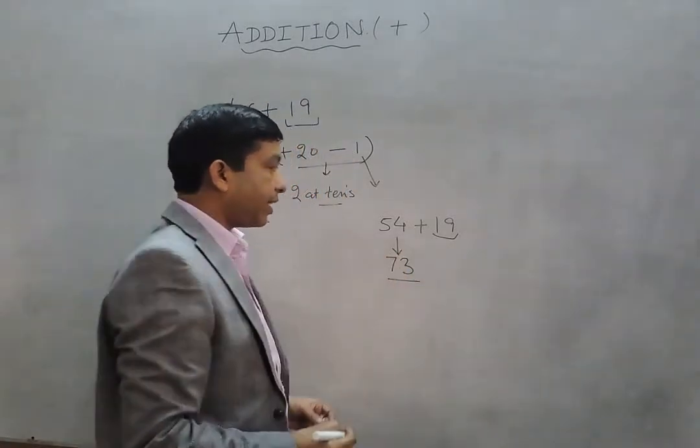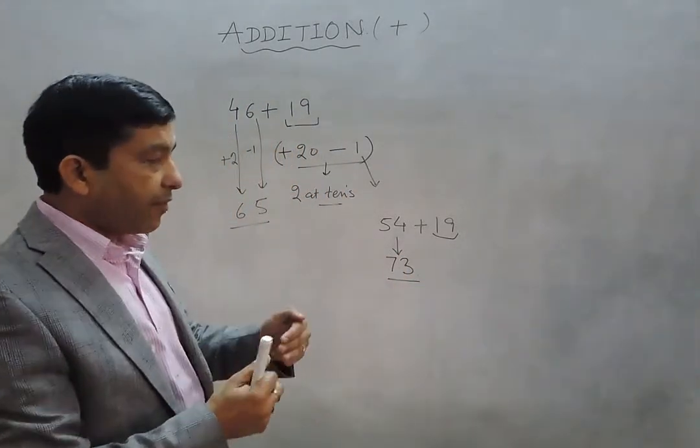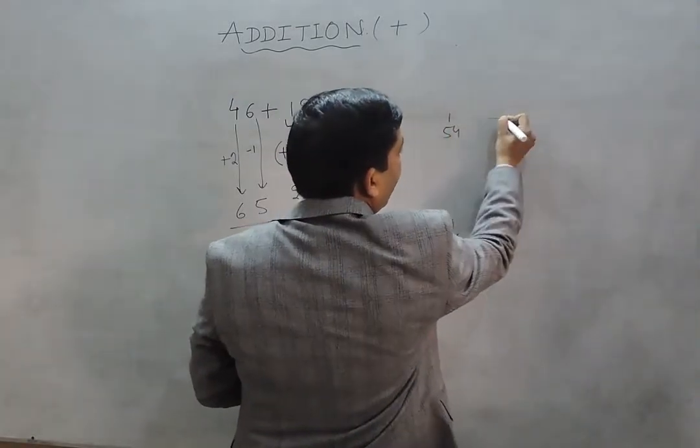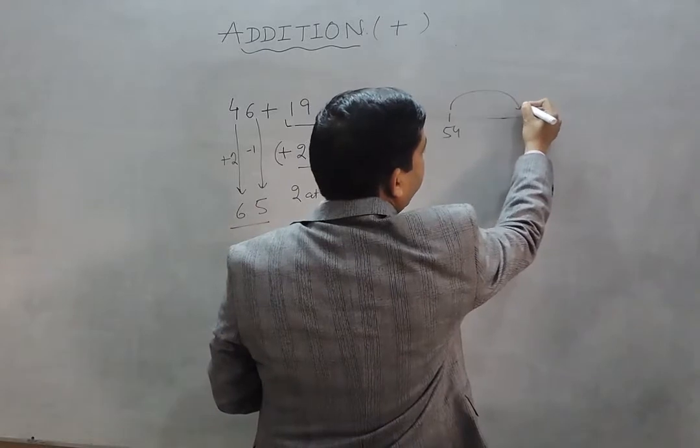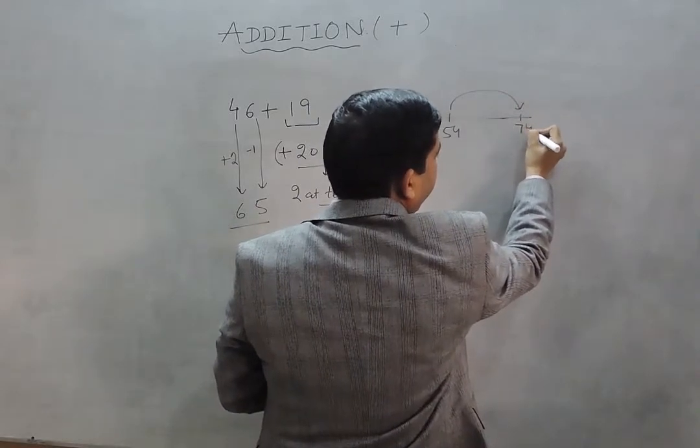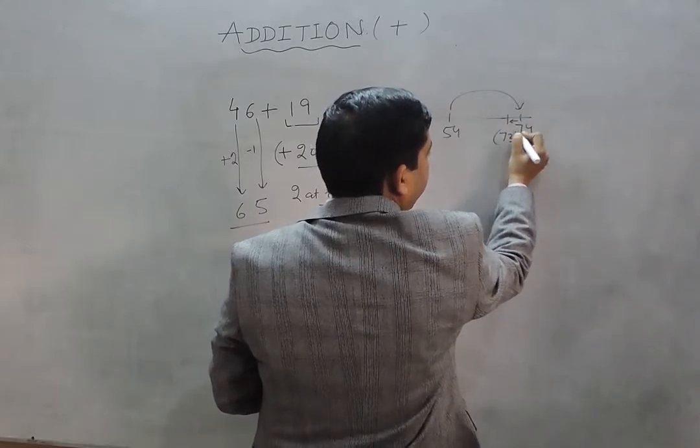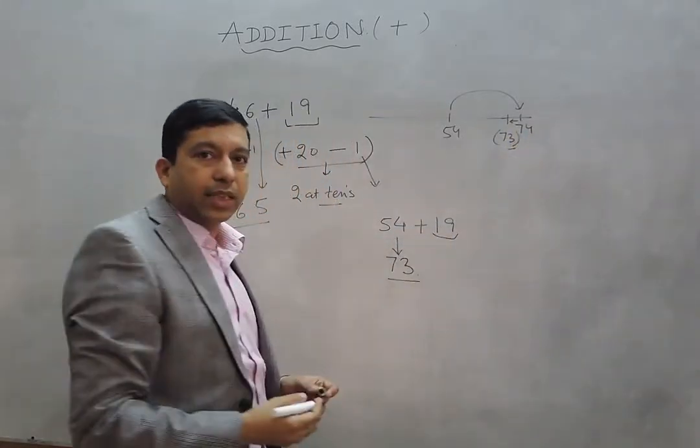So it becomes 73. Or we can say from 54 we're going 20 positions ahead which becomes 74, and then coming back one position, that is 73. So 73 is the correct answer for the addition of 54 and 29.